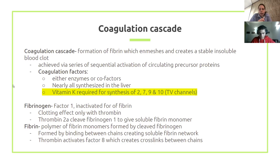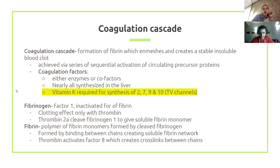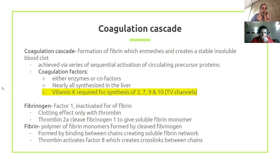The last step of the coagulation cascade converts fibrinogen — the soluble inactive form — to fibrin, which is insoluble, forming the stable clot. Fibrinogen is cleaved by thrombin to produce insoluble fibrin. Thrombin also activates factor 8, which seals off the entire fibrin network.